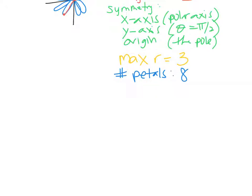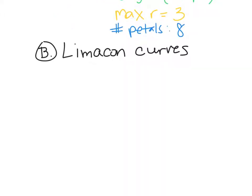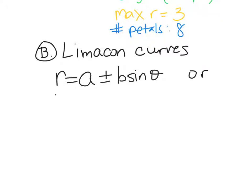Part B. Now these are called Limaçon curves — or Limaçon. People say it different ways. Limaçon curves look like this: R equals A plus or minus B sine theta, or R equals A plus or minus B cosine theta. Doesn't matter. Now there are four different types of Limaçons. You could have a Limaçon that has an inner loop.